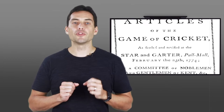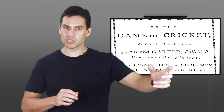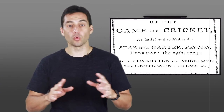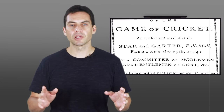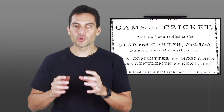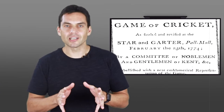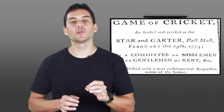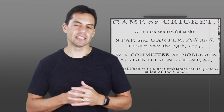These laws stated that the principals shall choose from among the gentlemen present two umpires who shall absolutely decide all disputes. The codes were drawn up by the so-called Star and Garter Club, whose members ultimately founded the MCC at Lord's in 1787. The MCC immediately became the custodian of the laws and has made periodic revisions and recodifications subsequently.